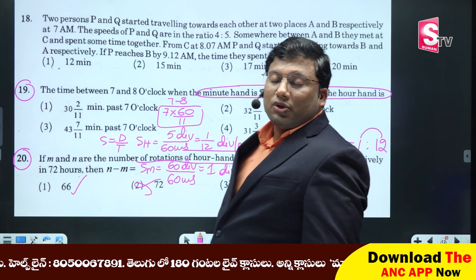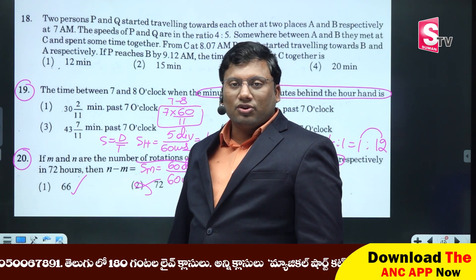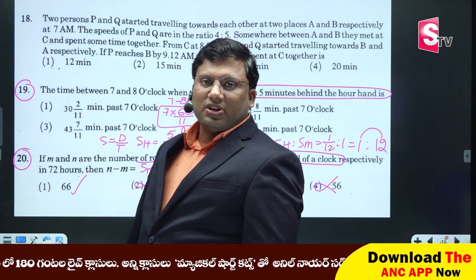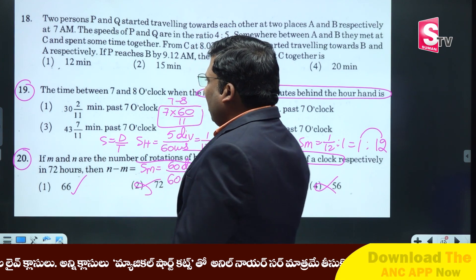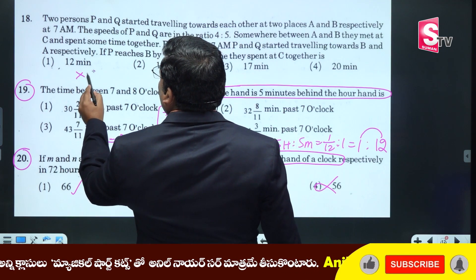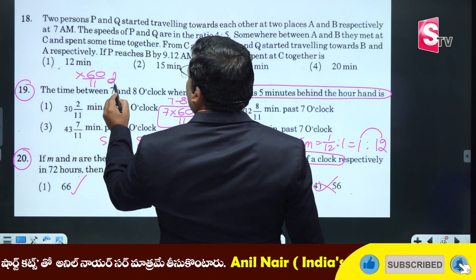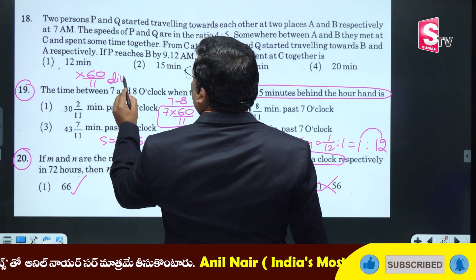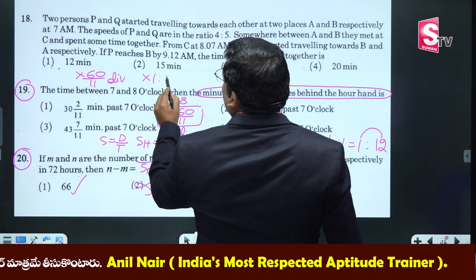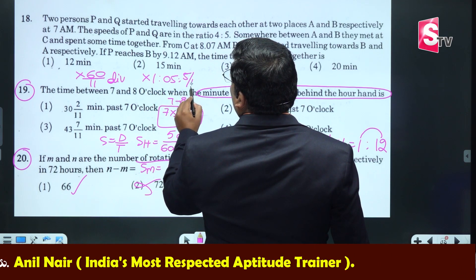Why is 7 into 60 by 11 for coincidence? You have a clock class on the ANC YouTube channel — it is free. Check the clock class: 7 into 60 by 11. Divisions multiply by the hour hand, that is the minutes of the hour hand — 5 to 5 by 10.